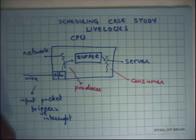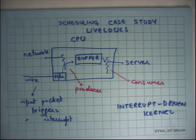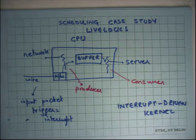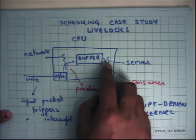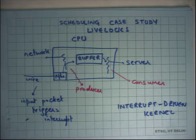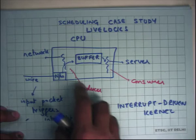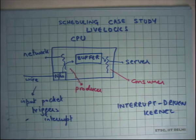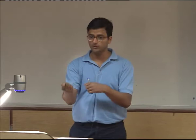Let's say I have an interrupt-driven kernel. Each time I get a packet, I get an interrupt, and the packet gets copied from the network card to a buffer in main memory. There is another process — a server — consuming from this buffer, doing some processing, formulating a reply, and sending it back. In an interrupt-driven kernel, I model this as a producer-consumer where the producer is the network card and the consumer is the server thread. The producer is always higher priority than the consumer, so if the producer has something to do it preempts the consumer every time.